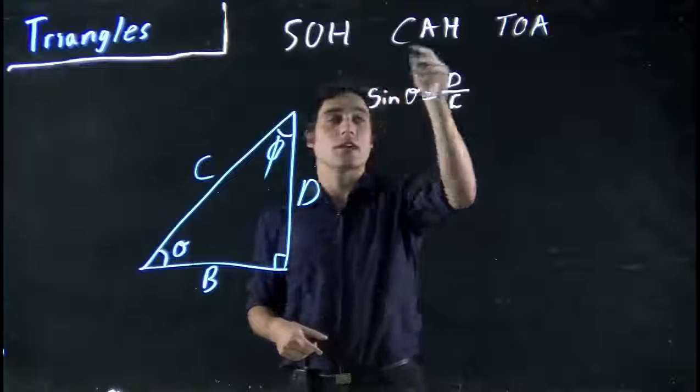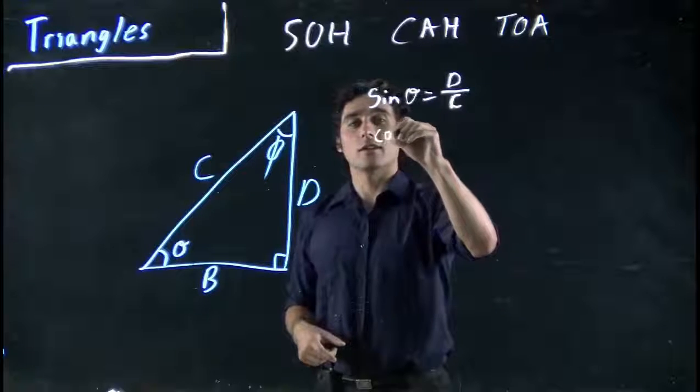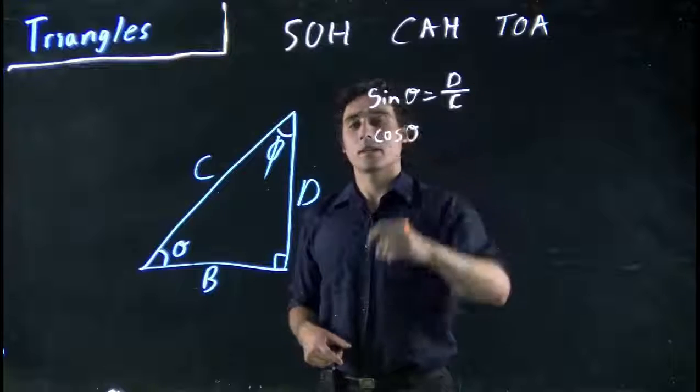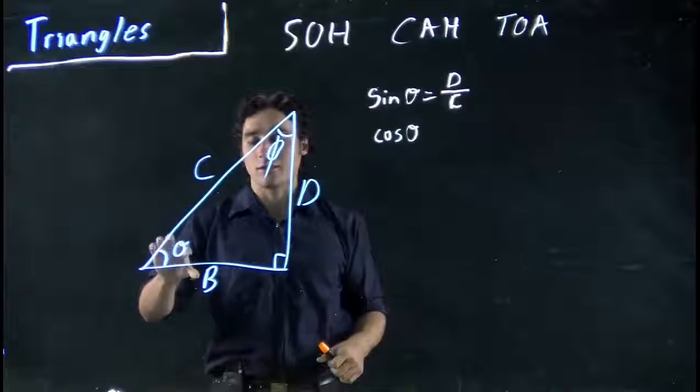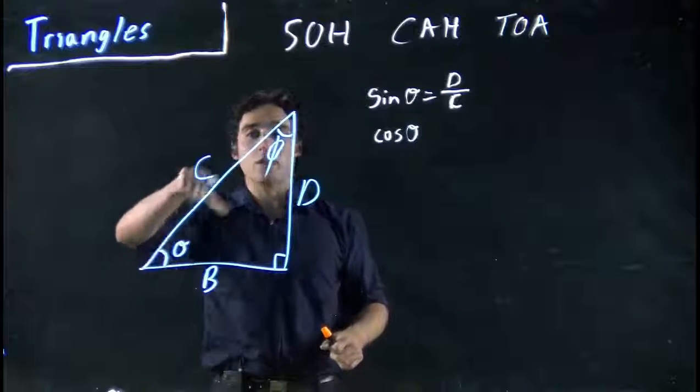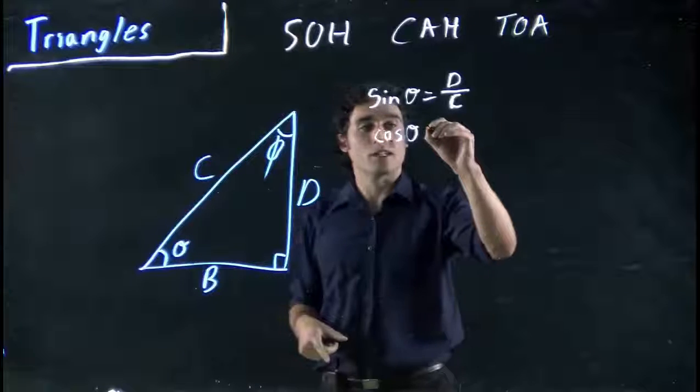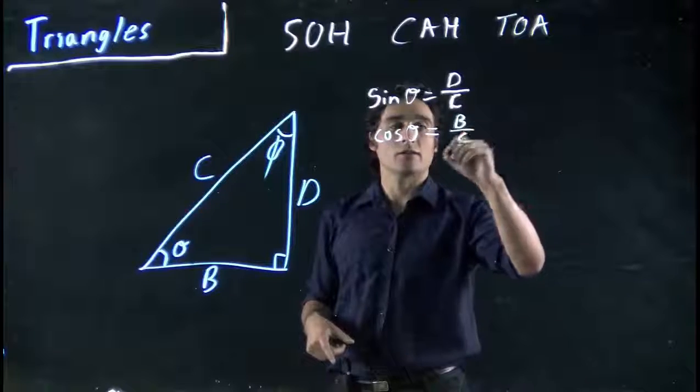So sine opposite over hypotenuse, D over C. And if we were doing cosine of theta, in this case, it's adjacent over hypotenuse. Which one's adjacent? Well, right now you can think technically C and B are adjacent to theta. But C we know is hypotenuse. It's the longest one. So our adjacent must be B. And again, over hypotenuse C.